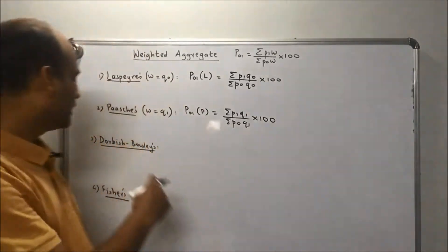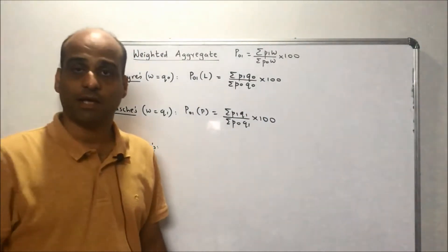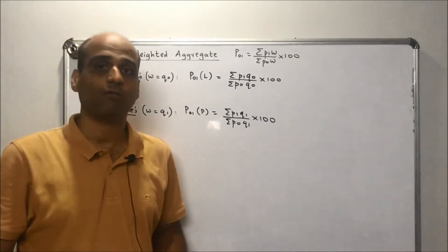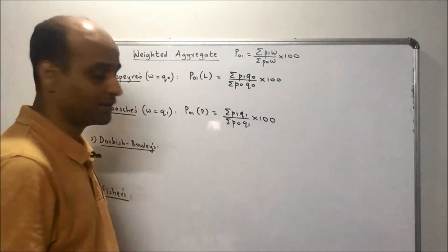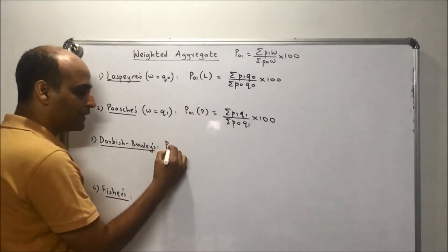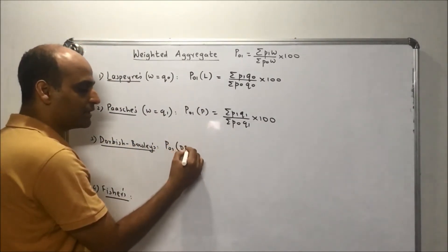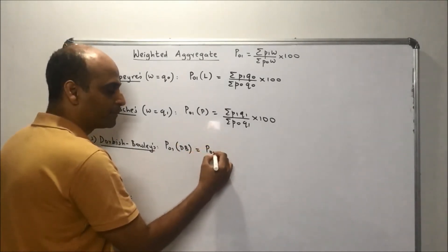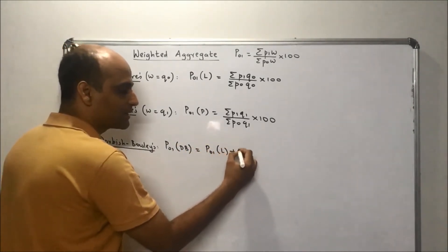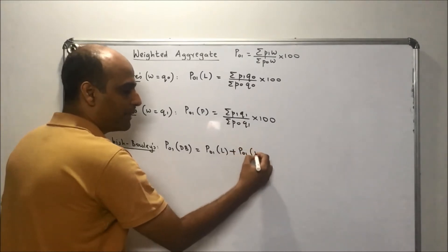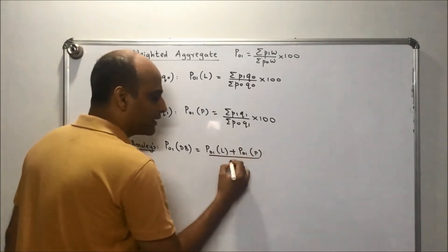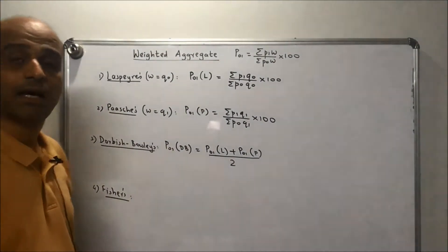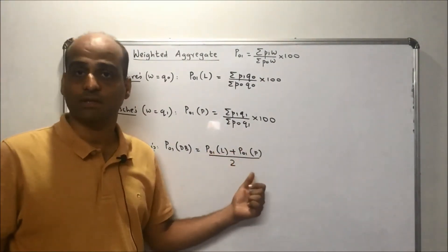Next is Dorbish-Bowley's index. As mentioned, Dorbish-Bowley's index is the arithmetic mean of the Laspeyre's and Paasche's indices. So the price index in case of Dorbish-Bowley's is Laspeyre's index plus Paasche's index, divided by 2.